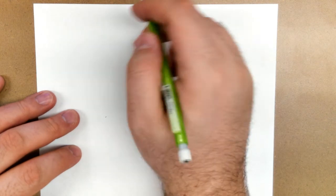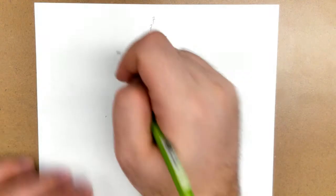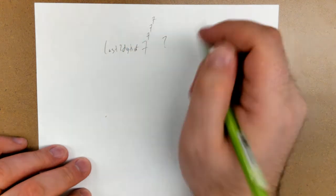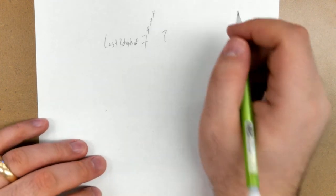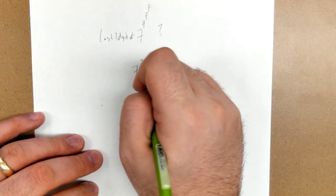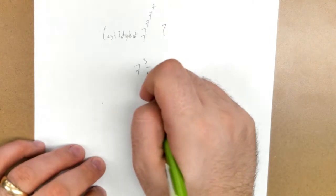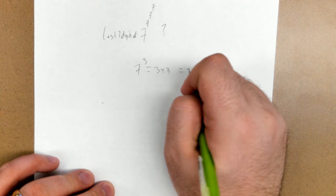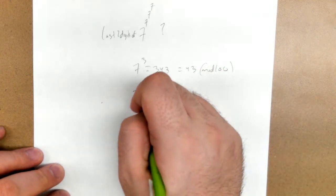The very first problem says, what are the last two digits of 7 to the 7 to the 7 to the 7? So the last two digits. Well, the last two digits would be the remainder when you divide by 100, right? So think about mod 100, and the hint says write out the third and fourth powers of 7 in the mod universe.